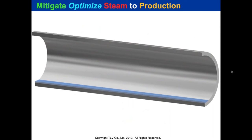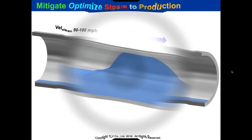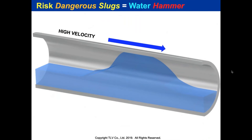Normal steam velocity is 90 to 100 miles an hour in a pipe. If you get a slug buildup, it could reach over 400–500 miles an hour, causing an incident — typically at a vertical riser. What if that's running up to a flare tip or going into a turbine blade? We want to prevent the possibility of slugs.